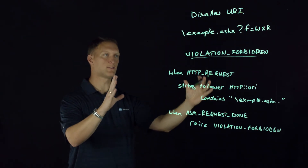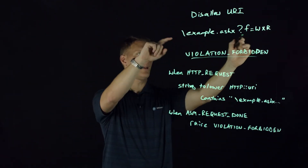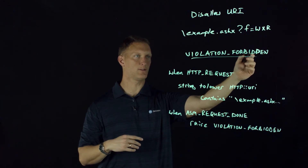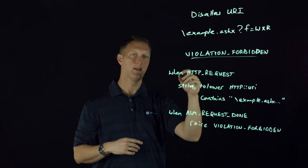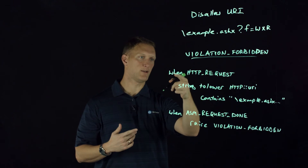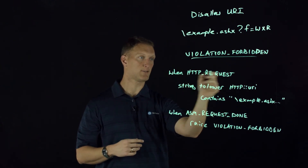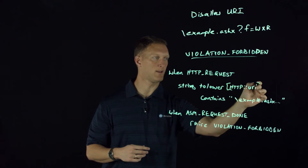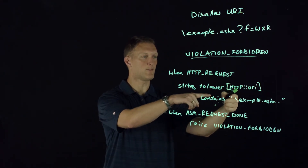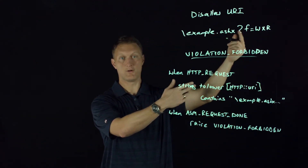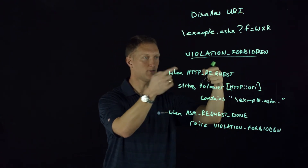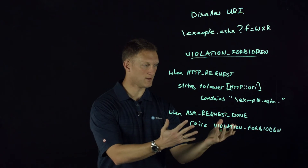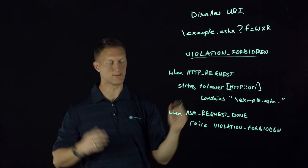So essentially what we're doing is: we have a URI that we don't want anyone to get to. We create a custom violation called 'violation forbidden' on the ASM. Then we create an iRule that checks the request URI using string tolower, compares it to our target URI, and if it contains that string, we raise the violation forbidden — and they can't get to it.